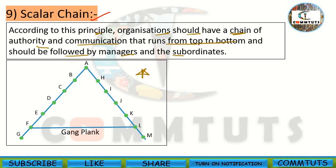Let's look at your school as an example. If you have a problem in school or you want some improvement, you would not directly go to the committee members or directors of the school. First, you would discuss the issue among your friends, and then the matter moves up through proper channels — this is the scalar chain in action.